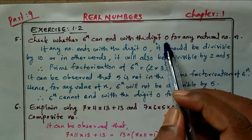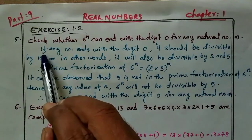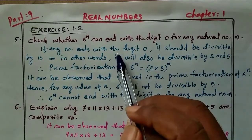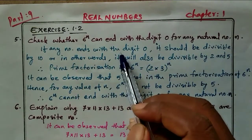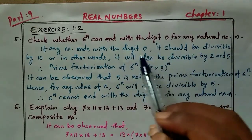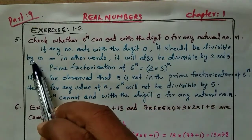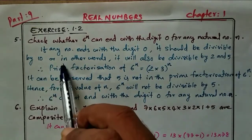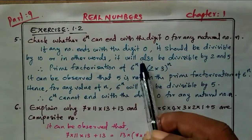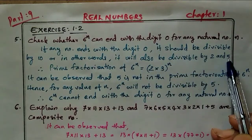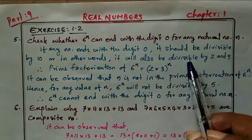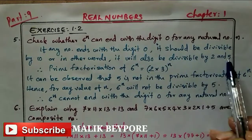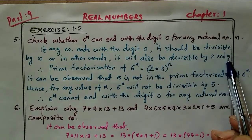If any number ends with the digit 0 — for example 10, 100, 260, 360 — it should be divisible by 10. In other words, it will also be divisible by both 2 and 5. For example, 10 is divided by 2 and 10 is divided by 5.